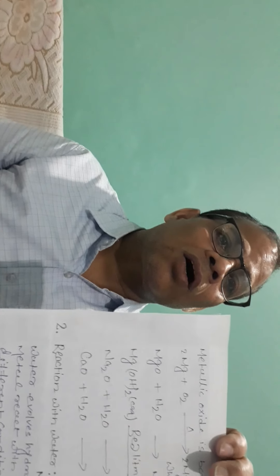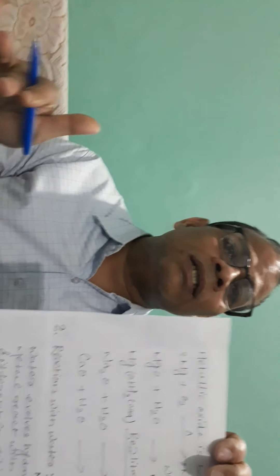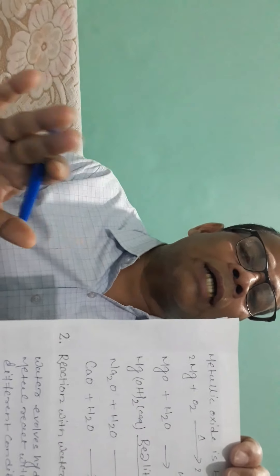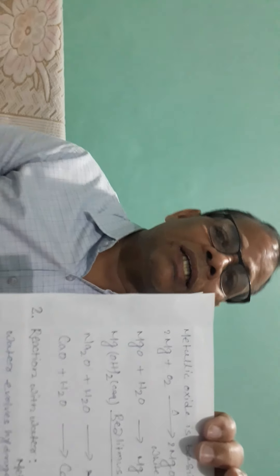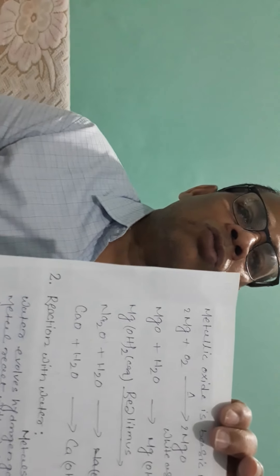Iron does not react with ordinary steam — it needs red hot iron passed through steam, and then it reacts to form a mixed oxide. Metals like copper, silver, gold, and platinum do not react even with steam, because their reactivity is very much less than hydrogen.